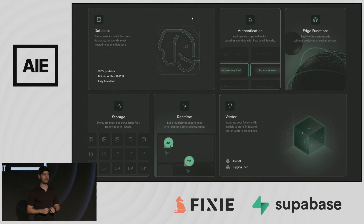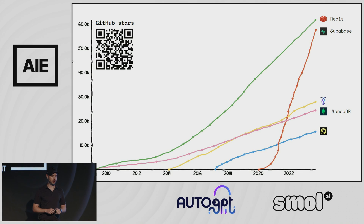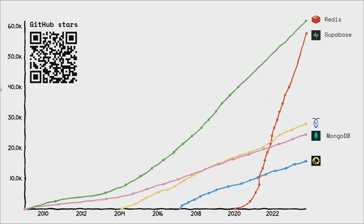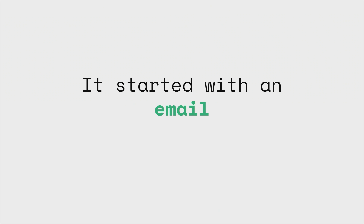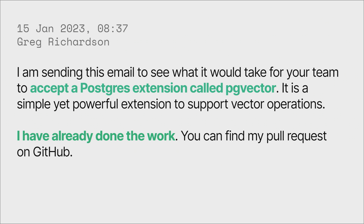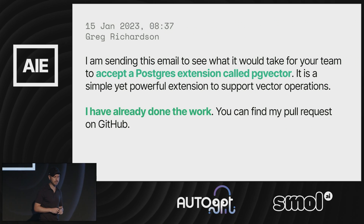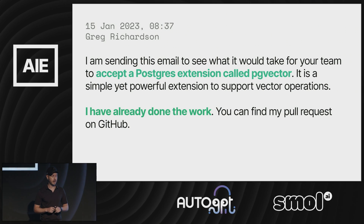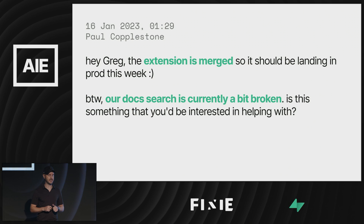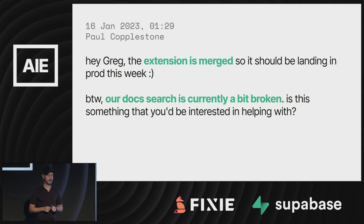We're open source — operating since 2020, everything MIT licensed, Apache 2, or Postgres licensed. We try to support existing communities wherever we can, and that's largely why we support PG vector. It's an existing tool and we contribute to it. The PG vector story started with just an email from Greg, who said: 'I'm sending this email to see what it would take for your team to accept a Postgres extension called PG vector — a simple yet powerful extension to support vector operations. I've already done the work, you can find my pull request on GitHub.' I jumped on a call with Greg, and the next day I emailed him: 'The extension is merged, it should be landing in prod this week.'